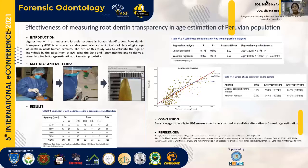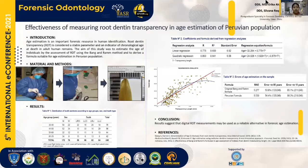In table number two, we can observe the regression analysis that we performed. For all the samples, we used the formula of Van and Ram for sectioned teeth. After performing the regression analysis, we observed that there is a better correlation related to a quadratic regression.